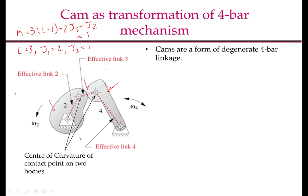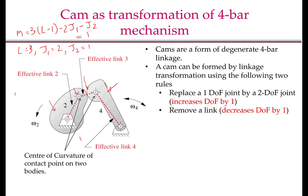Now instantaneously, a cam can be thought of as a 4-bar mechanism. If we look at the contact point and then consider the center of curvature of the contact point on the cam as one moving pivot and the center of curvature of the contact point on the follower as another moving pivot, then the two fixed pivots and these two moving pivots form a 4-bar mechanism. This 4-bar mechanism is equivalent to the cam at this configuration. And when I say equivalent, I mean equivalent in terms of kinematics. In particular, you can see that the cam is formed by linkage transformation by replacing a 1-degree-of-freedom joint by a 2-degree-of-freedom joint and then by removing this link. So from this direction also, you can see that the degree of freedom of the cam follower mechanism should be 1.